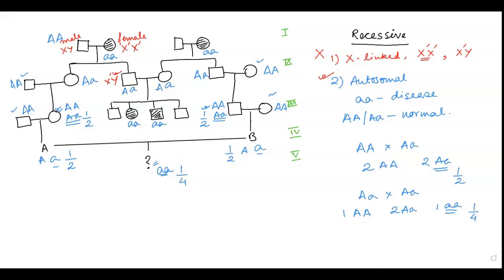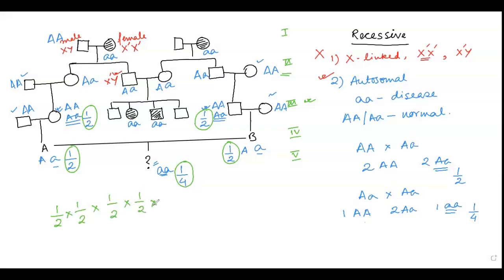Up to the second generation, all genotypes are certain. From the third generation onward, the probability of inheriting 'Aa' is halved at each step. Since all these events are independent, we multiply all the probability values: one-half × one-half × one-half × one-fourth = 1/64. So the probability of the child in the fifth generation being diseased is 1/64.